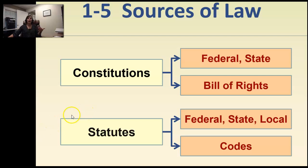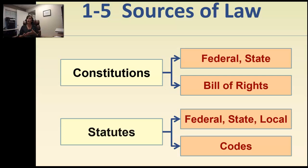We have two main sources of law. One stems from our constitution — we have both federal and state constitutions. If you have not read your state constitution or your federal constitution, I encourage you to do that. Within your federal constitution we have the Bill of Rights, and to say something is a constitutional violation means it violates your Bill of Rights, either federally or from your state constitution.